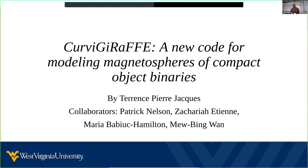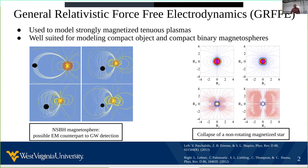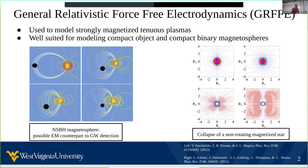Curvy Giraffe will be a code that will solve the general relativistic force-free electrodynamics equations, or the GRFFE equations. These equations represent the vanishing density and pressure limit of GRMHD, and as a result, are very well suited to model strongly magnetized tenuous plasmas, or regions where the magnetic fields dominate the dynamics.